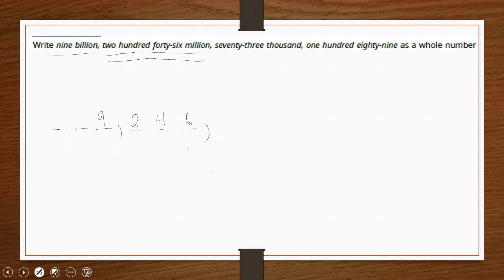73,000 would be our next period. So there's our thousands place. 73 would be 0, 7, 3. And then lastly we wrap things up, 189 for our last digits. These are in the ones place, so we don't really place anything at the end as far as commas. And there's our number: 9,246,073,189.